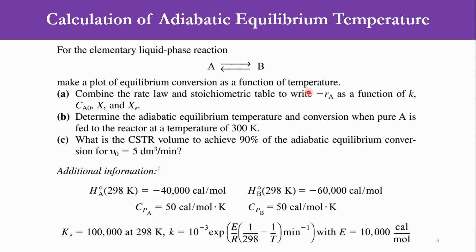Earlier our equation was -rA equal to K·CA0·(1-X). So K, CA0, and X would have been incorporated previously, but today we will learn how to incorporate Xe. The second part is to determine the adiabatic equilibrium temperature and conversion when pure A is fed to the reactor at a temperature of 300 Kelvin.